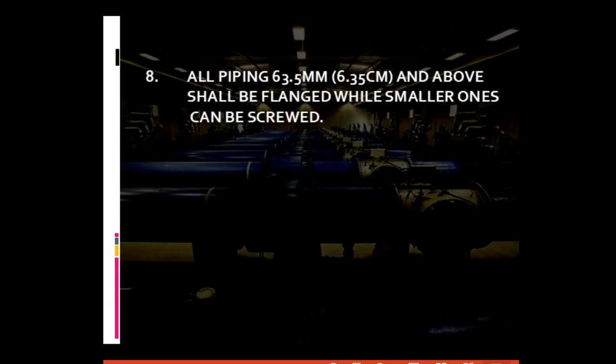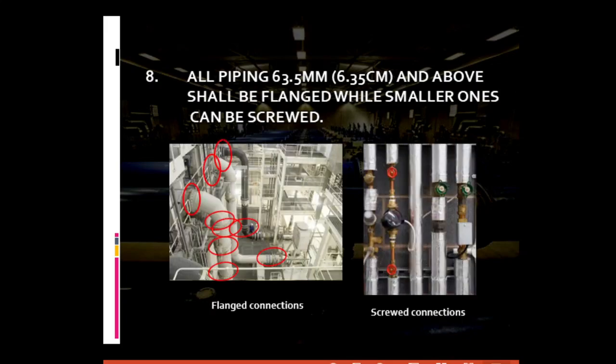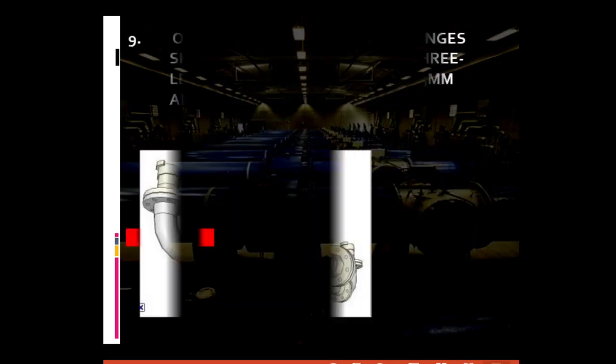For general piping requirement number eight: all piping 63.5 millimeters (equivalent to 6.35 centimeters) and above shall be flanged, while smaller ones can be screwed. Large pipe size diameters of 63.5 mm and above should use flange connections — a connection characterized by a pair of circular plates bolted together. The reason threaded connections are not used for large sizes is that there is no available pipe wrench or device that would turn large pipe sizes if they were threaded instead of being bolted by flanges.